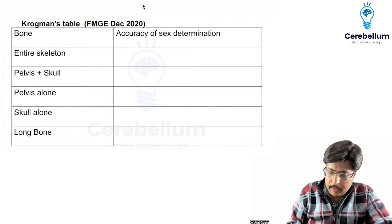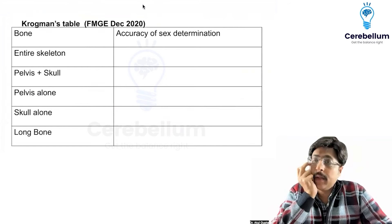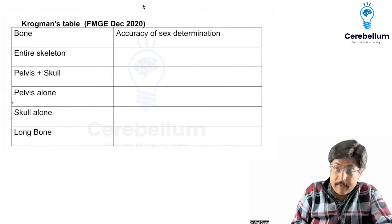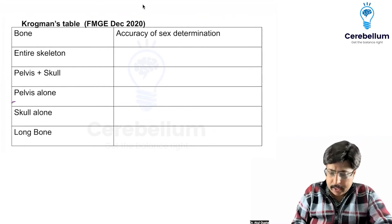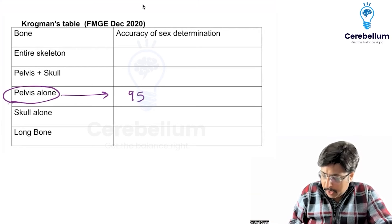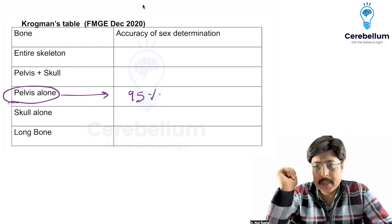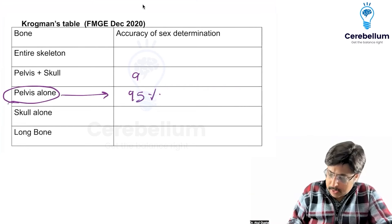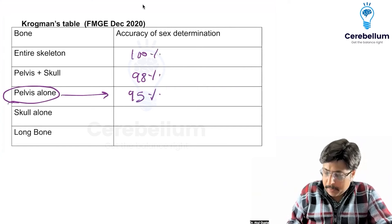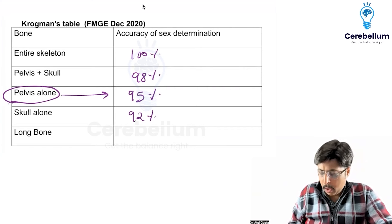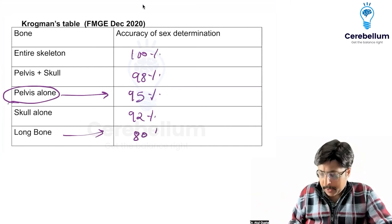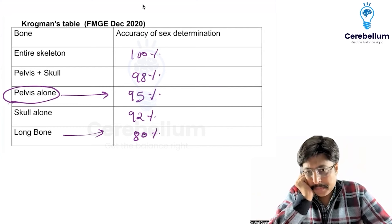Krogman's table — what is the best bone for sex determination? Pelvis is the best for sex determination. If the pelvis is available, it has 95% accuracy. Pelvis plus skull gives 98% accuracy. The entire skeleton gives 100%. Skull alone gives 92%. A long bone alone, like humerus or femur alone, gives 80% accuracy.